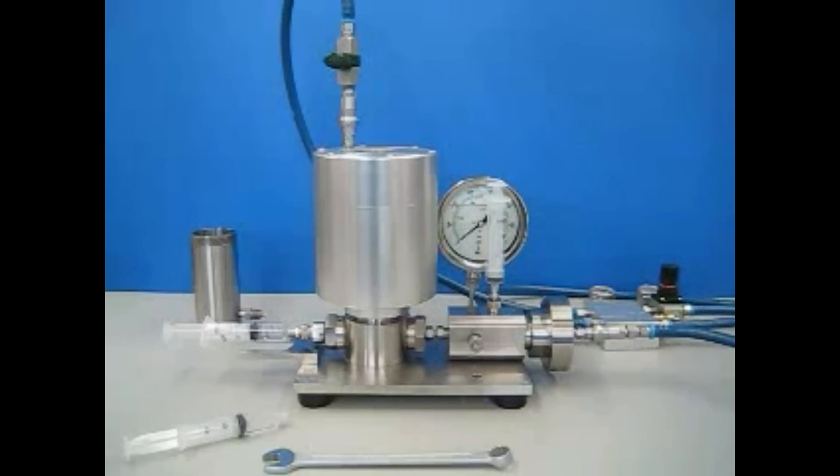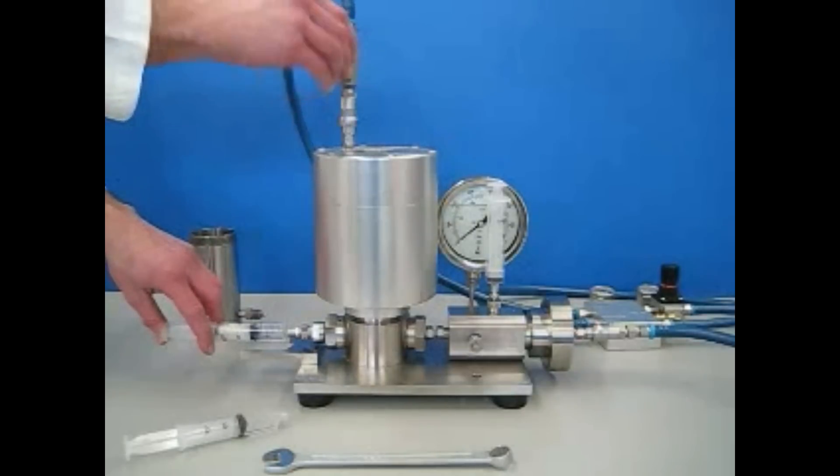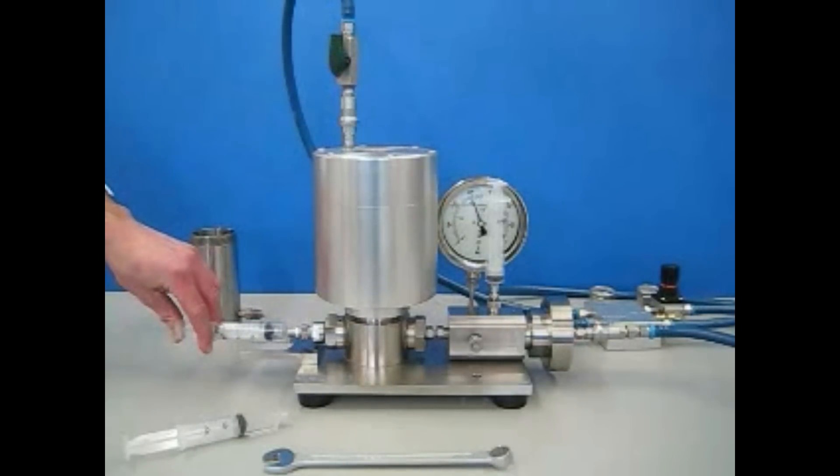The homogenizing pressure can be set before the sample is introduced to the machine. The C5 is turned on. A small amount of pressure on the inlet syringe primes the pump and the product starts moving through the C5. The homogenizing pressure has been preset so that all of the product collected has been homogenized.